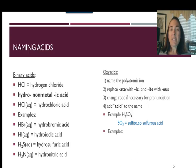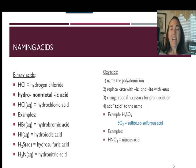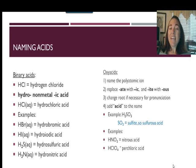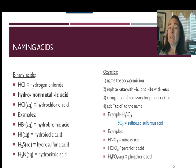Here are a couple more examples. HNO2: I know it's an acid because of the hydrogen, and NO2 is nitrite, so that becomes nitrous acid — '-ite' becomes '-ous'. HClO4: ClO4 is the perchlorate ion, and '-ate' becomes '-ic', so this is perchloric acid. And H3PO4: PO4 is phosphate, and '-ate' becomes '-ic', giving phosphoric acid. All oxy acids follow that set of rules.